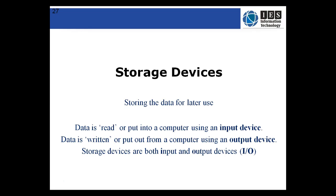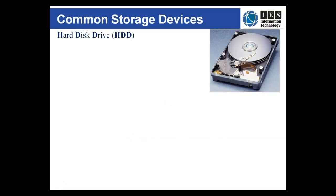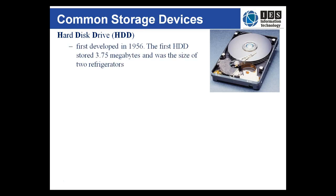Throughout the development of the computer, researchers have sought ways to store increasing amounts of data on increasingly small devices. The most common storage device is the hard disk drive, first developed in 1956 with a device that was the size of two refrigerators and stored 3.75 megabytes.